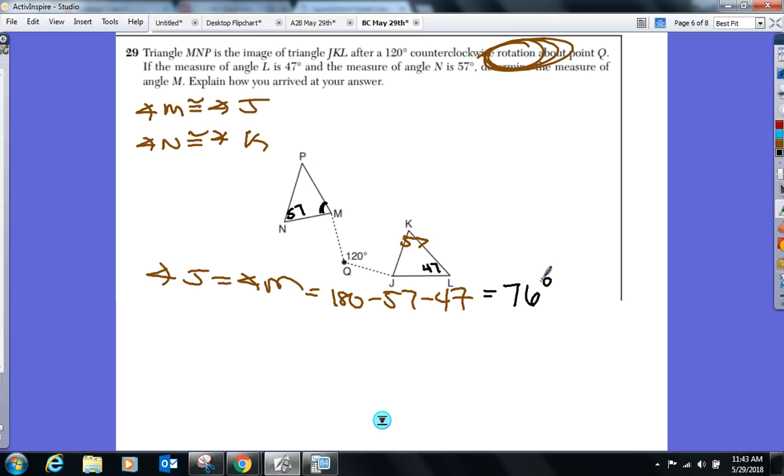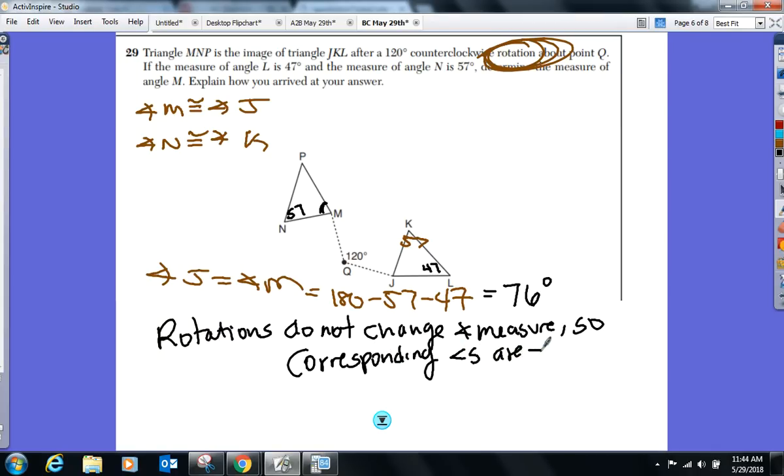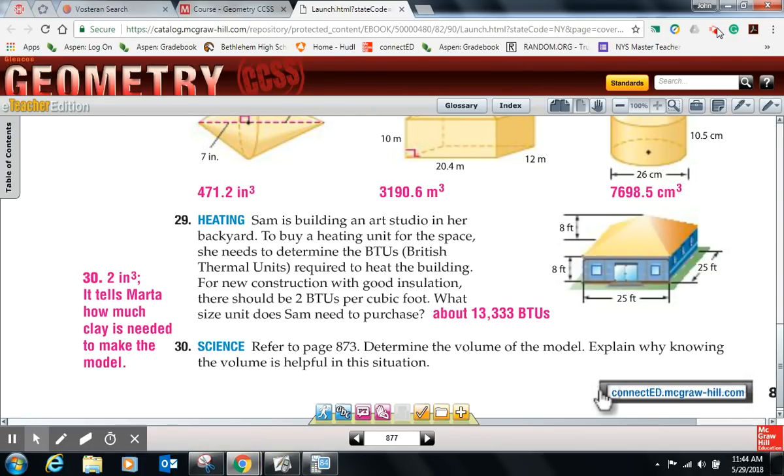But it also says explain how we arrived at our answer here. How'd you know their corresponding angles were congruent? Rotations do not change—what? Angle measure. So corresponding angles are congruent. That would be good enough here. Or you could say it's a rigid motion. Impress some people with your vocabulary. Just say rotations are rigid motions which preserve distance and angle measure. Try those four. They've only got four density problems on there tonight.